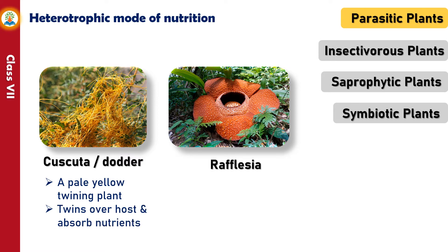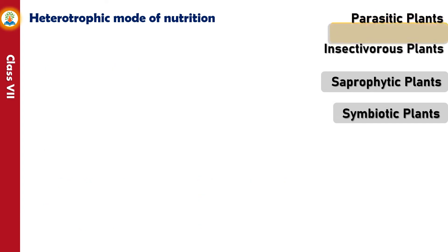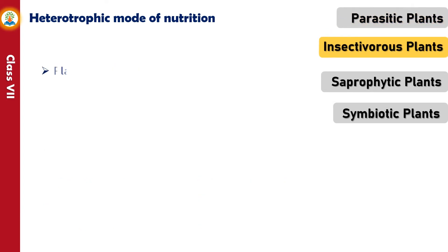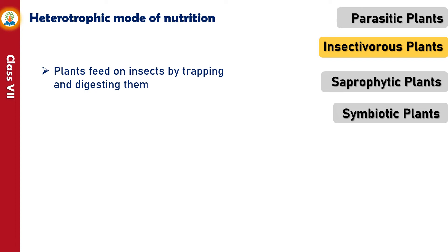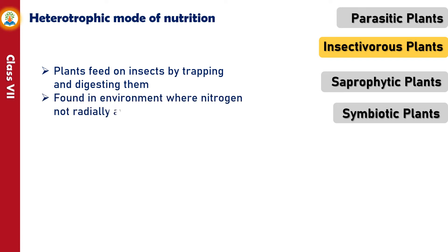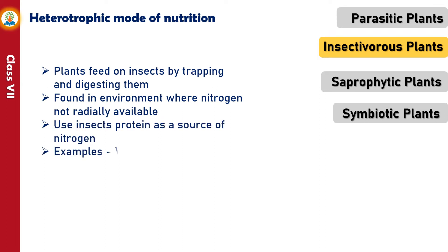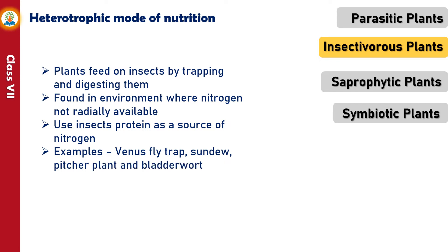Rafflesia is a parasitic plant found in the forests of Malaysia; it has the biggest and heaviest flower. Insectivorous plants feed on insects by trapping and digesting them. They are mostly found in environments where nitrogen is not readily available, and they use insect protein as a source of nitrogen. Examples include Venus flytrap, sundew, pitcher plant and bladderwort.